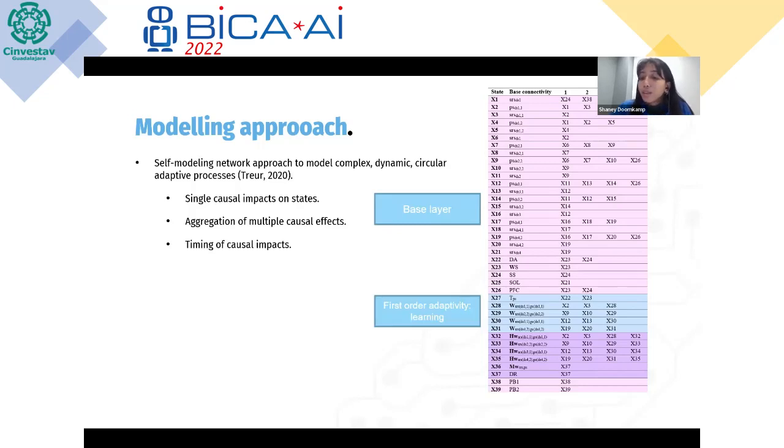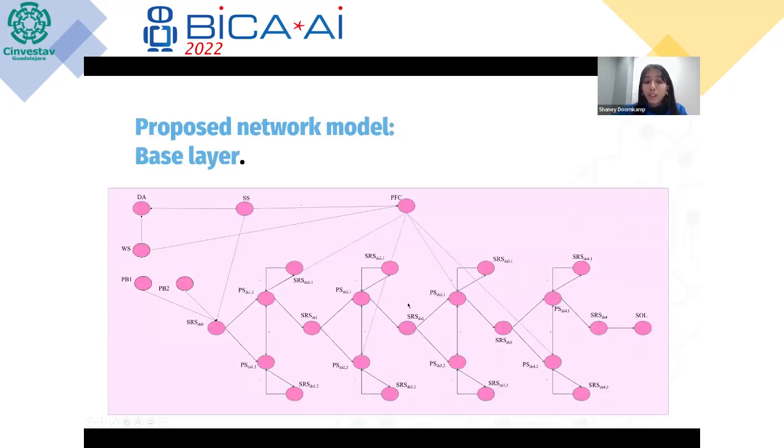The second layer, or the first layer of adaptivity, models the learning of types of connections that we make. Based on Hebbian learning principle, neurons that fire together wire together. You're likelier to remember these types of dreams if you learn them. The second order is the speed of learning, which is modeling metaplasticity, which controls whether learning will happen or not. Now I'll show you in an illustrative manner how our model looks.